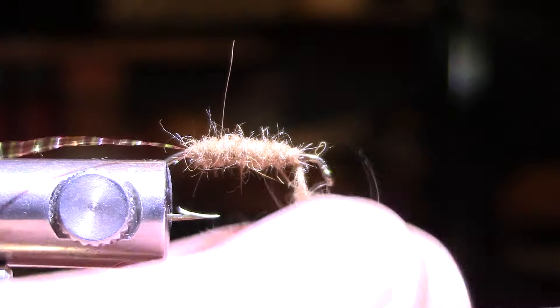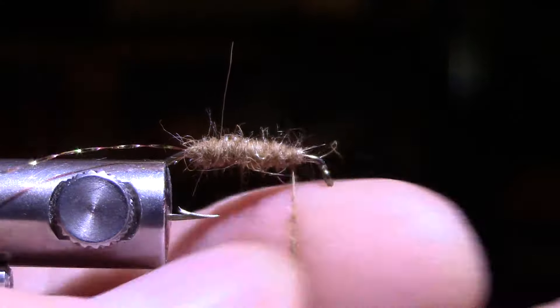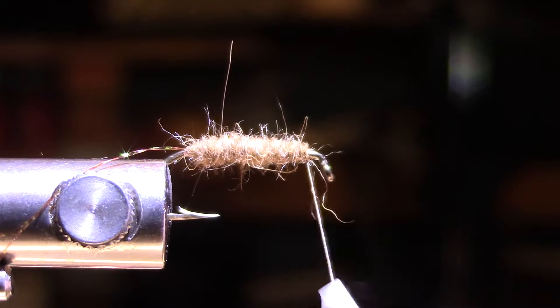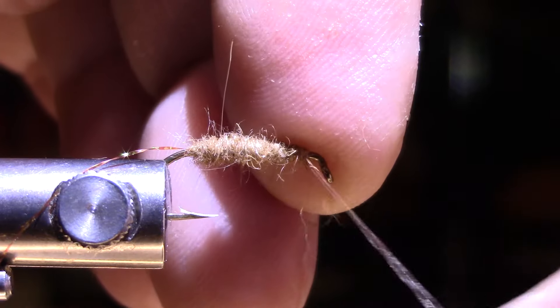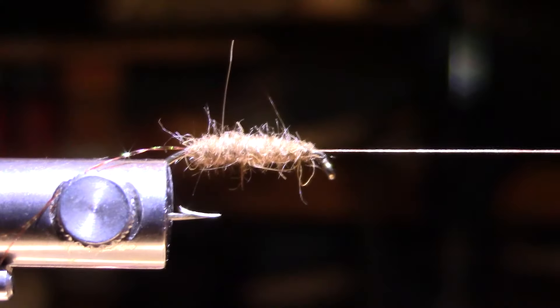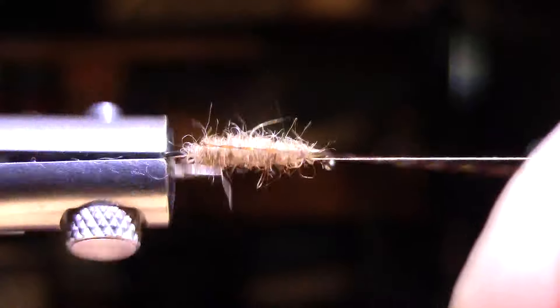Getting close there now, that's probably pretty good. Let's just throw a half hitch in there and then I'm going to take my rib and I will just counter wrap.